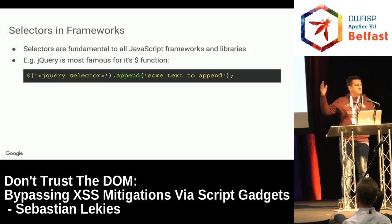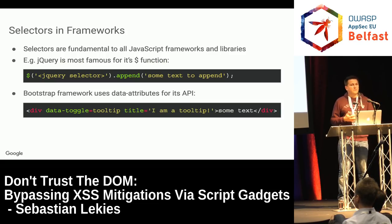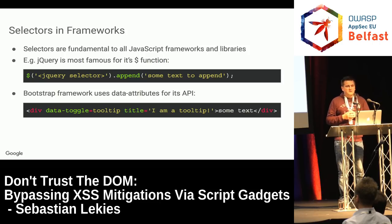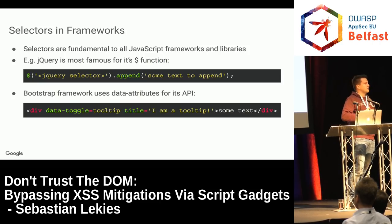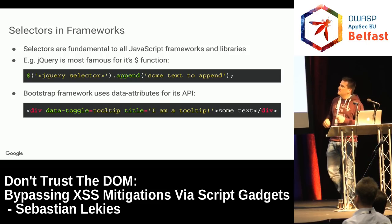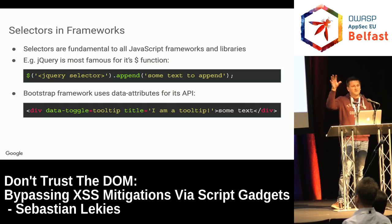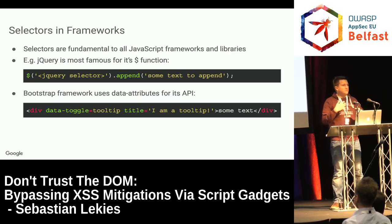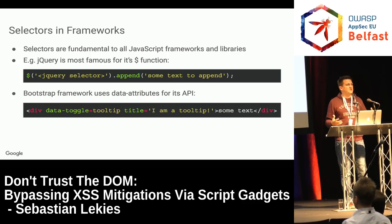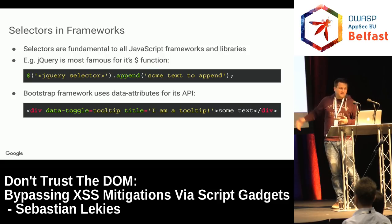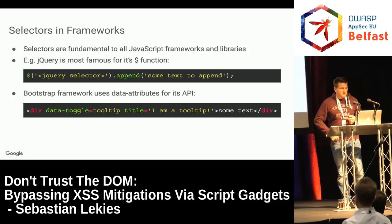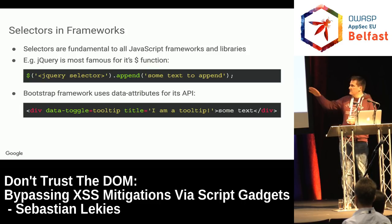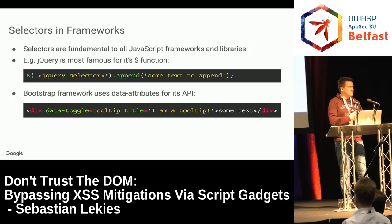Another example of selector usage is Twitter Bootstrap's data attributes API. Bootstrap uses selectors to find all elements in the DOM with a certain attribute set. For example, in a tooltip, you put data-toggle equals tooltip on your element, and Bootstrap code picks that up and bootstraps the tooltip functionality, rendering the title tag on the page — all driven by selectors, even if you can't see it directly.